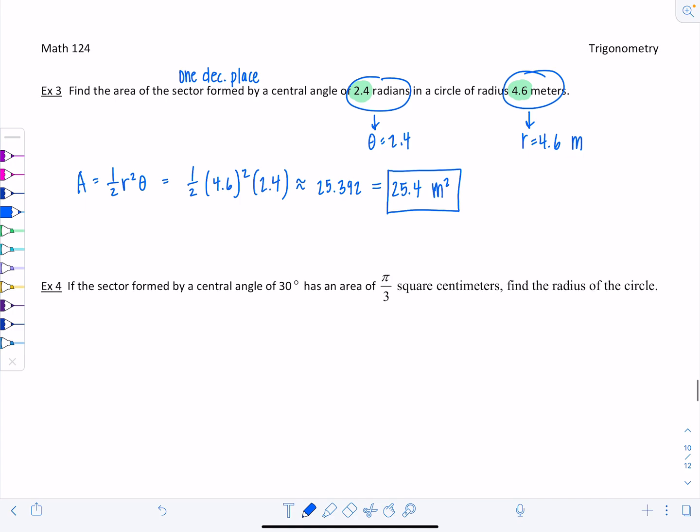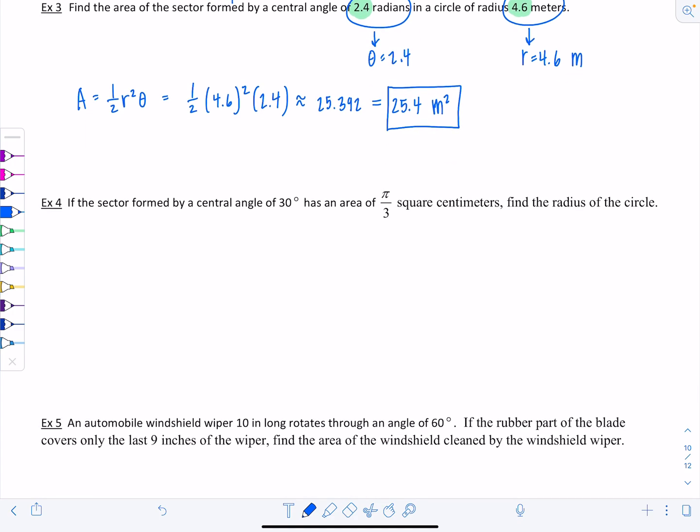Example 4. If the sector formed by a central angle of 30 degrees has an area of π over 3 square centimeters, find the radius of the circle. This π over 3 is the area already given to us. They want us to find the radius. Here they're telling me the central angle is 30 degrees, but I know this formula only makes sense if theta is measured in radians. 30 degrees is equivalent to π over 6 radians. Remember the little 3-6 swap trick I talked about in the last lesson?